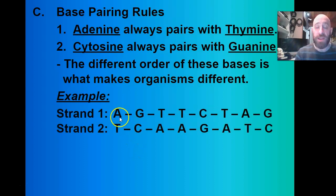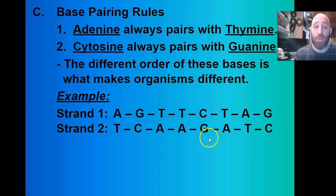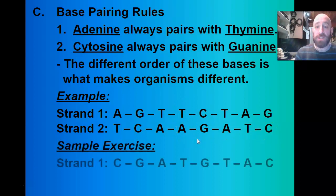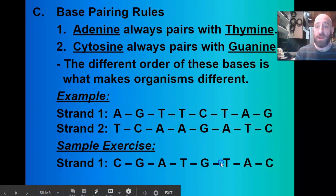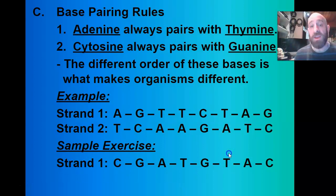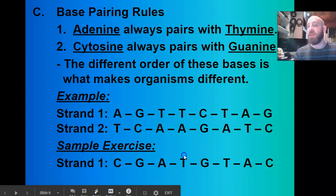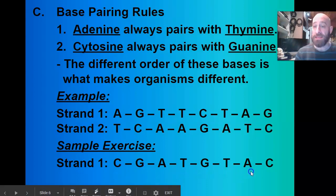For example, if strand A is A, G, T, T, C, T, A, G — then the complementary strand that attaches to it would be T, C, A, A, G, A, T, C. A goes with T, C goes with G, all the way down the line. Let's do a quick exercise: given a top strand, what would the bottom strand look like? The answer would be G, C, T, A, C, A, T, G — because it complements the top strand.